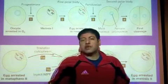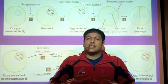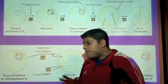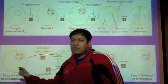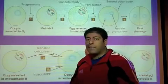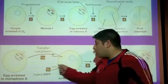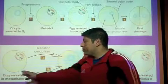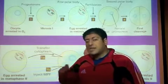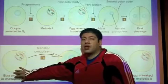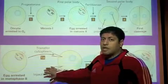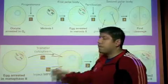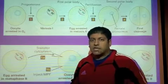This first experiment tells us that there is a cytoplasmic component, or factor, that exists in the cytoplasm of cells that have already entered M phase, which can stimulate other cells to also enter M phase. Some factor in the cytoplasm of a cell already in M phase can cause another cell that is not in M phase to enter M phase. That is the very initial first experimental manipulation we're going to examine.